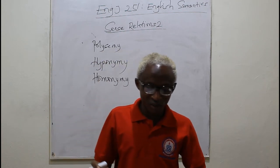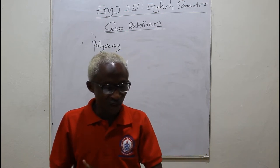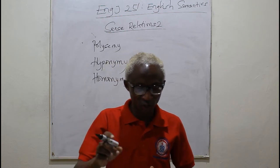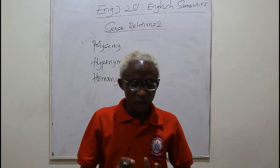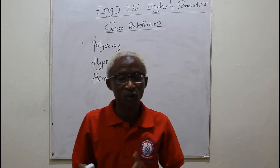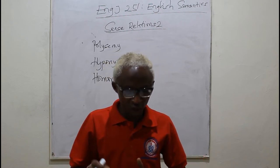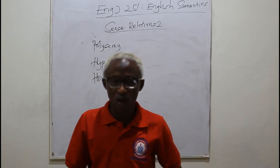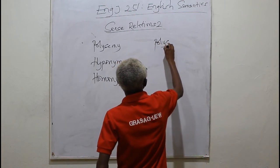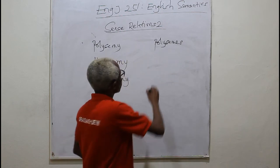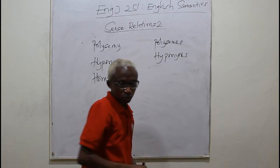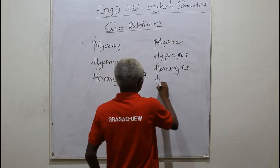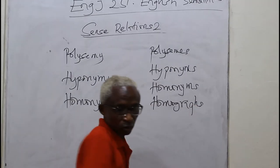By the end of the lesson, the learner will be able to explain with examples what polysemy is, state and explain the types of polysemy, explain with examples hyponymy, state the features of hyponymy, explain with examples what homonymy is, differentiate between homographs and homophones, and state at least two causes of homonymy. The key words are polysemes, eponyms, homonyms, homographs, and homophones.